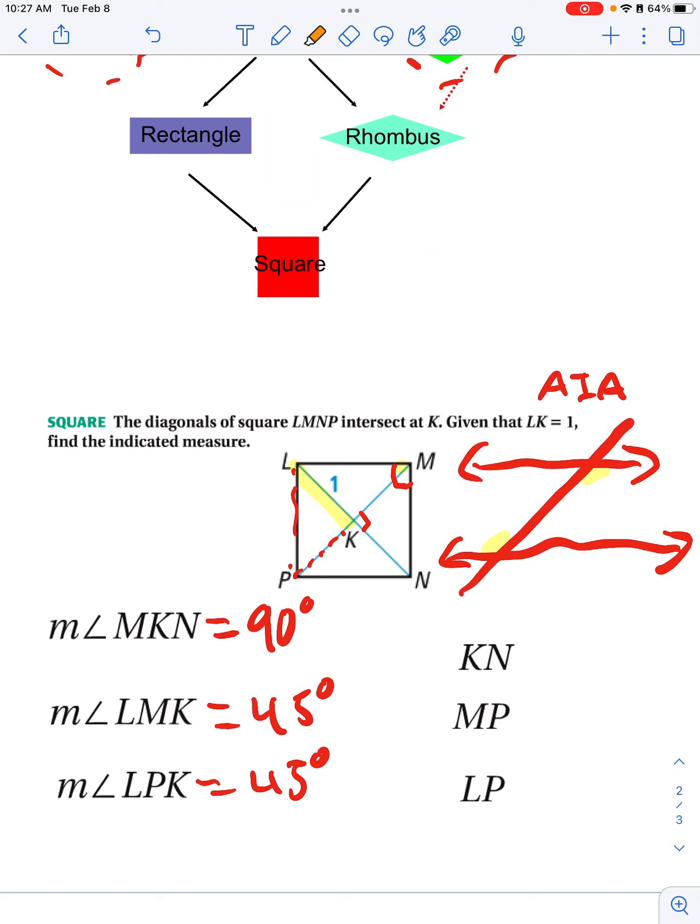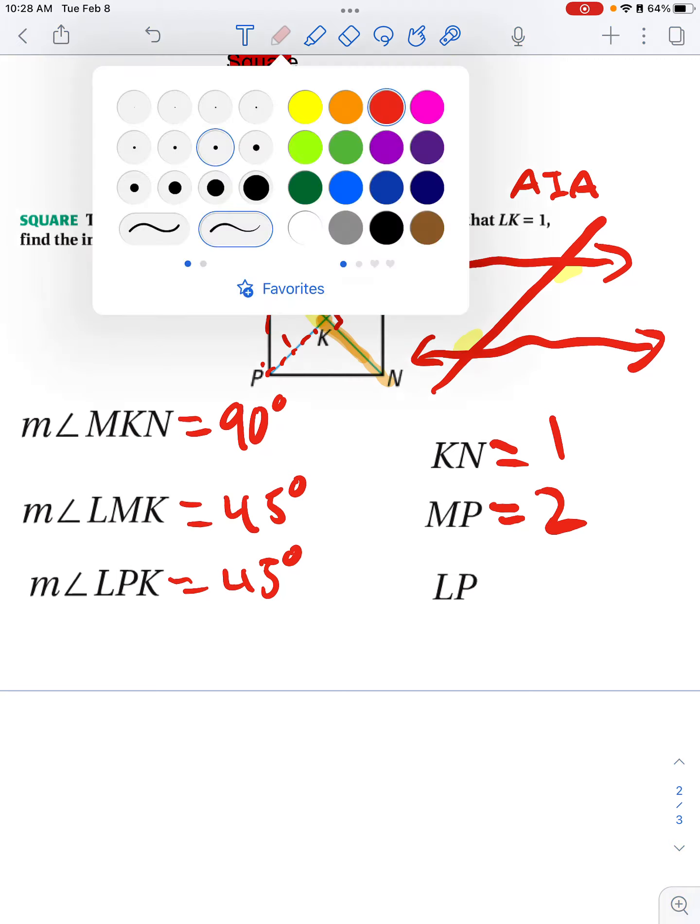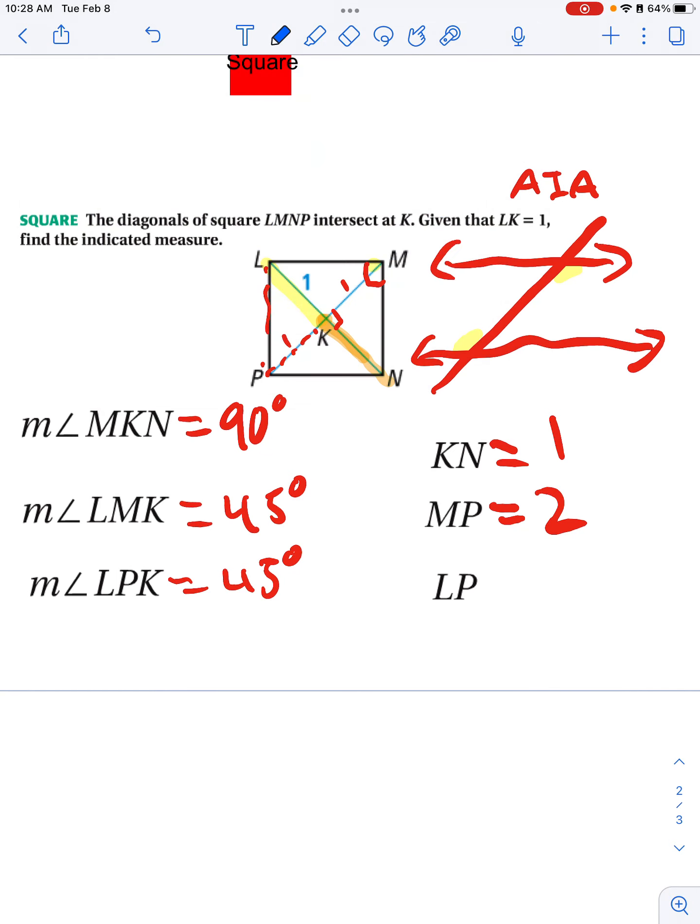If LK is one, then that means KN is also going to equal one, and that means that MK is one and PK is one. And one plus one equals two, so MP equals two. And now we don't necessarily know what LP is.